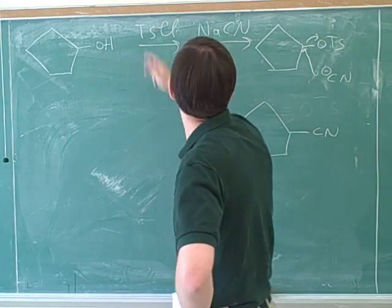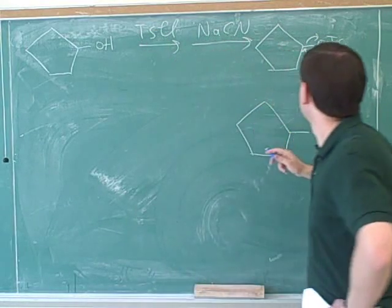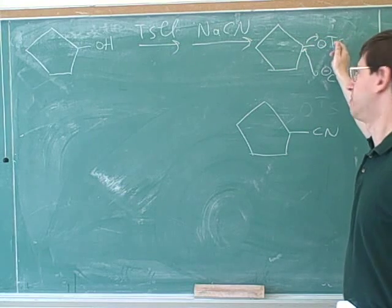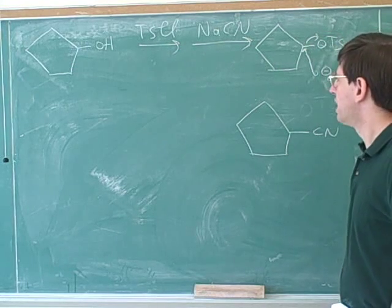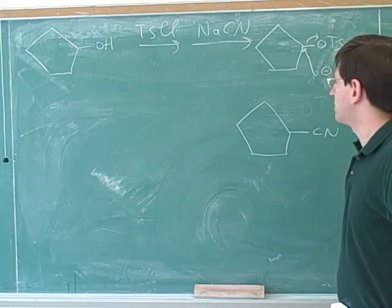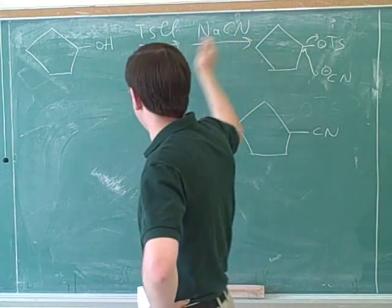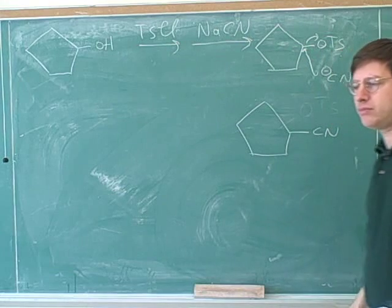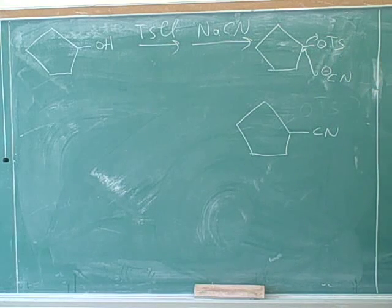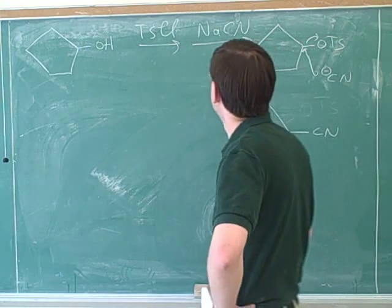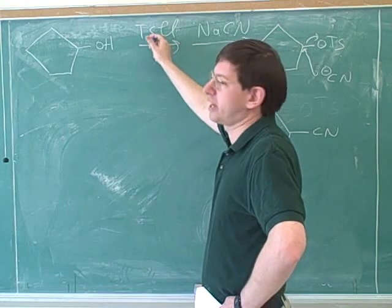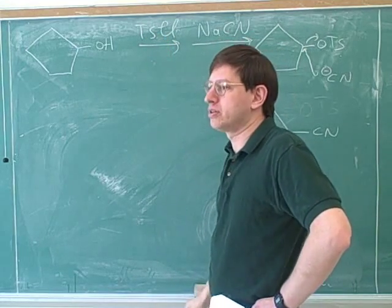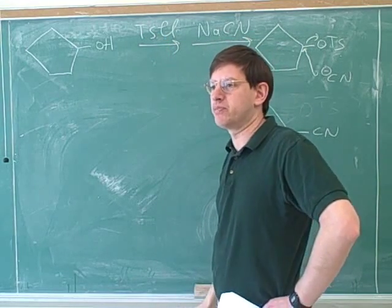You remember that this is the way that we make sulfonates. We didn't go through the mechanism for that — we just memorized that this is the way to make sulfonates. What was the purpose of making this into a sulfonate? Why couldn't we just have the cyanide attack the alcohol? Because we needed a good leaving group here. And this is one of our good ways to make an alcohol.